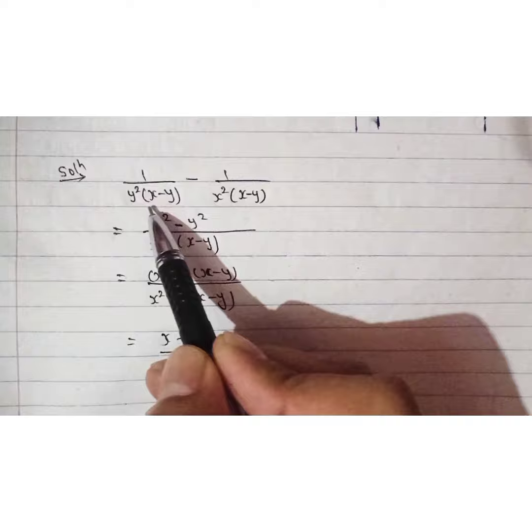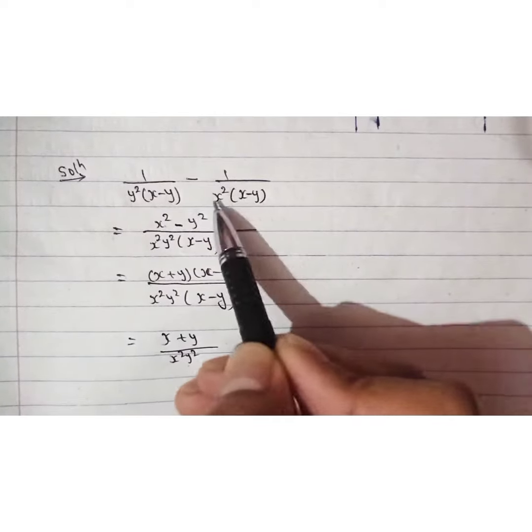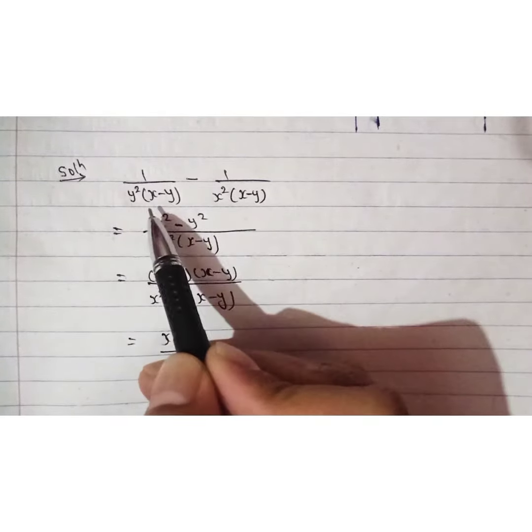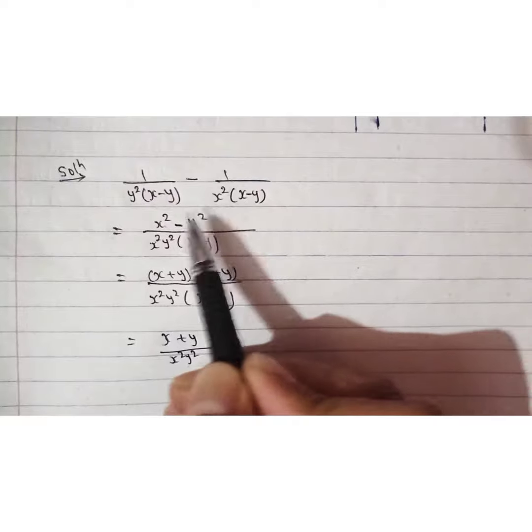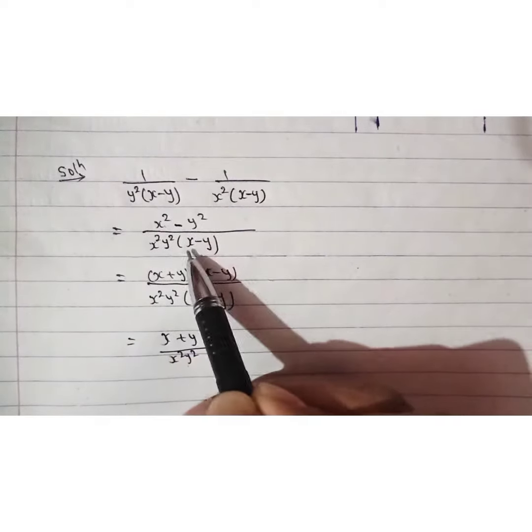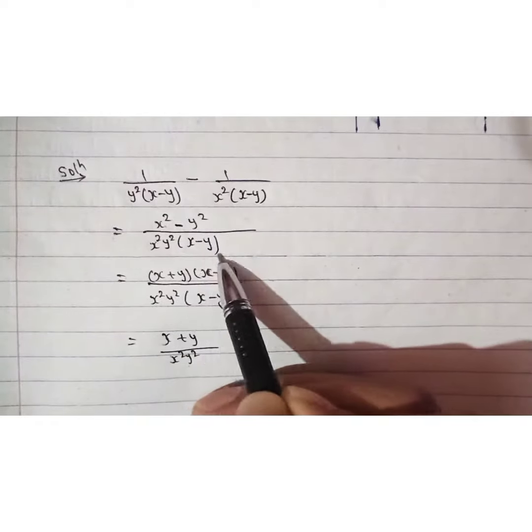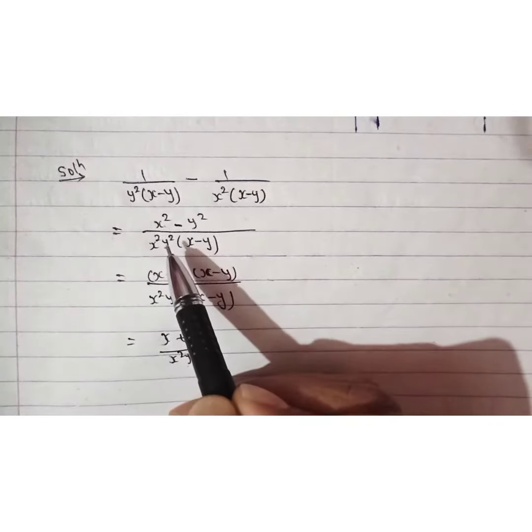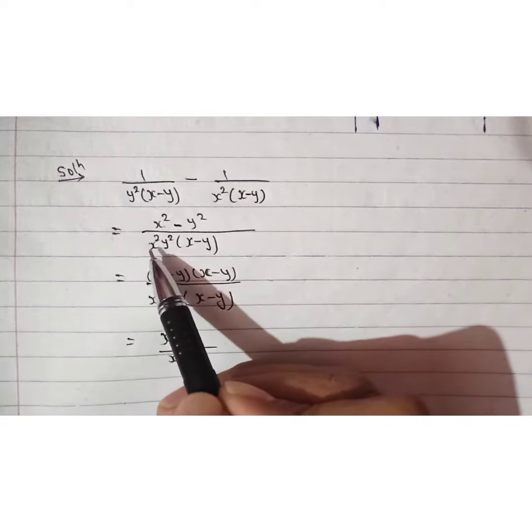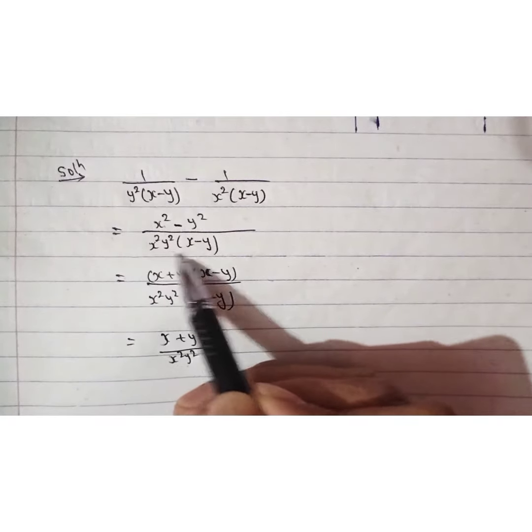As we see here, (x-y) and (x-y) are common. Then if we take the LCM from these denominators, we get x²y²(x-y). By taking the LCM of these two denominators...